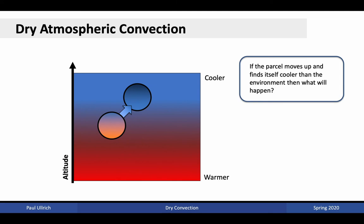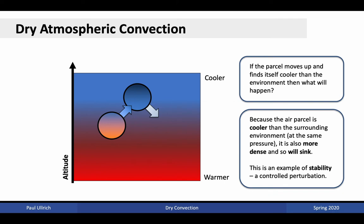Consider our first situation: the parcel is initially displaced upwards. Because pressure decreases with altitude, the temperature of the fluid parcel also decreases. If it now finds itself cooler than its environment, then because the air parcel is cooler, it is also more dense than the surrounding environment. Thus buoyancy forces the fluid parcel to sink. This is an example of stability — an upward perturbation is compensated, and this small perturbation does not allow the fluid parcel to move infinitely from its initial location.